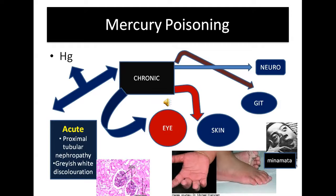We broadly classify mercury poisoning into two types: acute poisoning and chronic poisoning. In acute poisoning, it affects the kidney, leading to proximal tubular nephropathy, and there is also a grayish-white discoloration of the mouth.